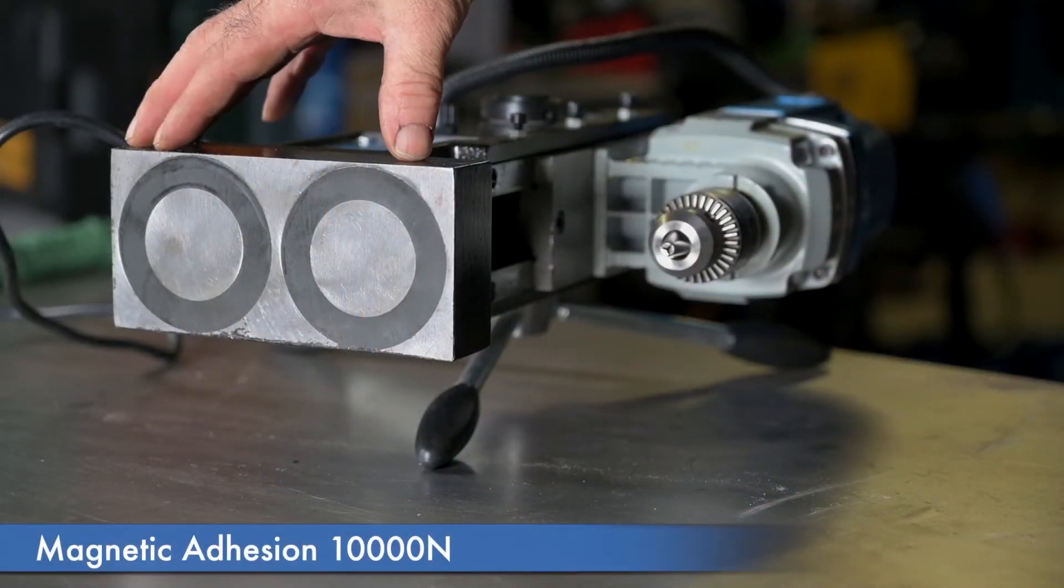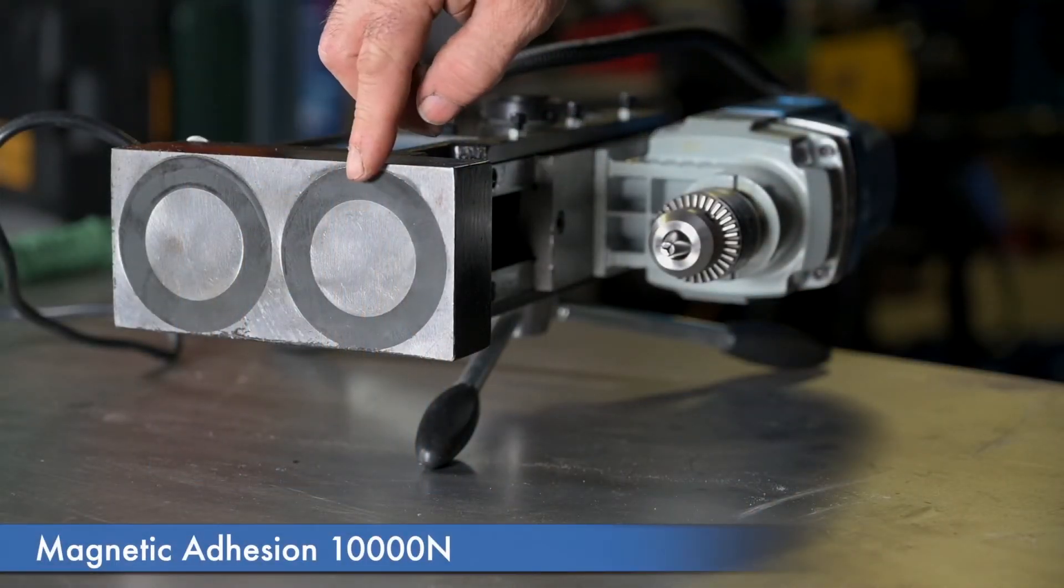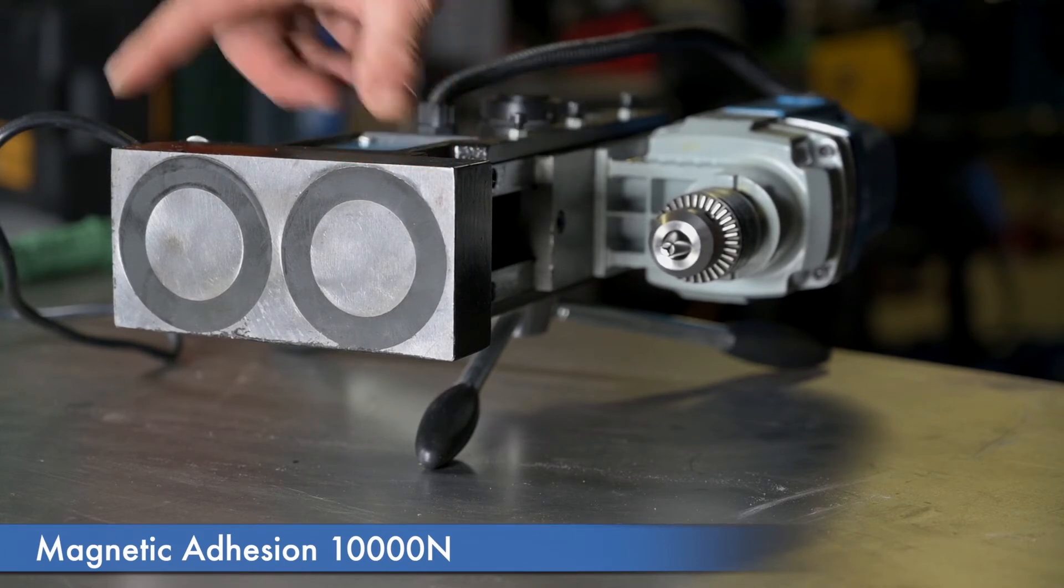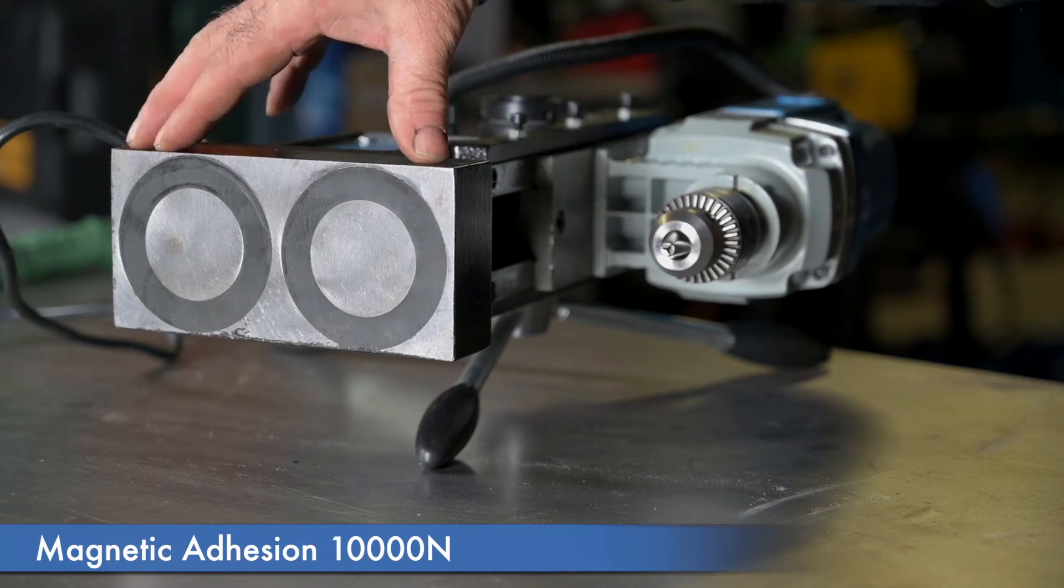This is the bottom side of the drill and it has two large electromagnets, and these are the ones that are locking down or sucking down the drill onto any metal part.